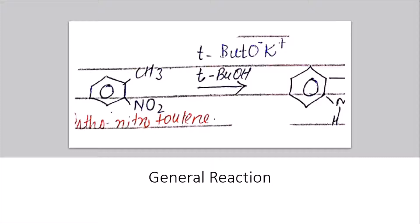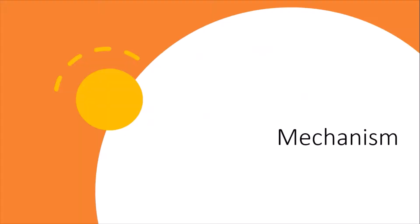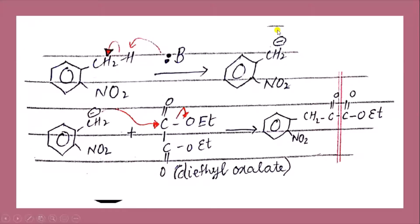Now we will discuss its mechanism. This base will attack on the hydrogen of CH3, and this electron will transfer towards CH2. We have CH2 negative. In the next step, the electrons of this CH2 group will attack on the diethyl oxalate.